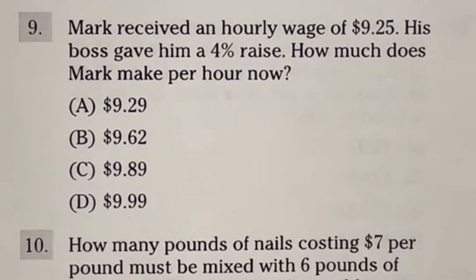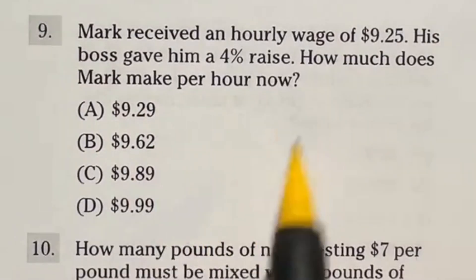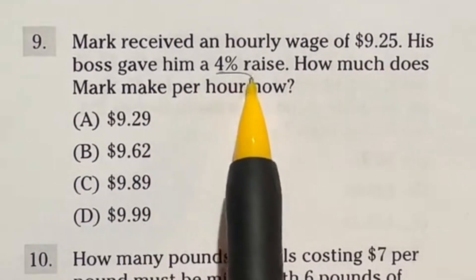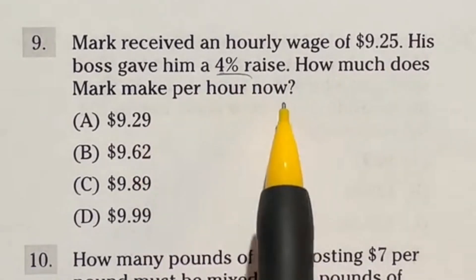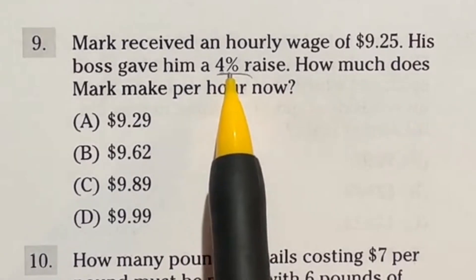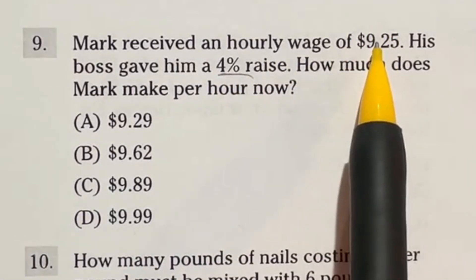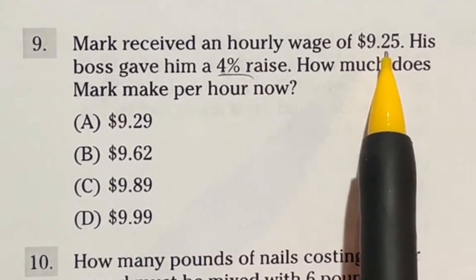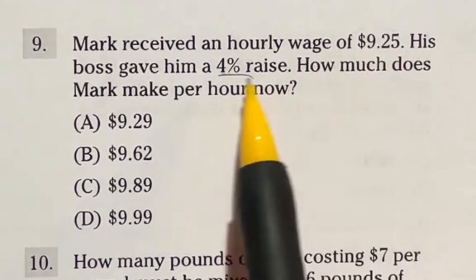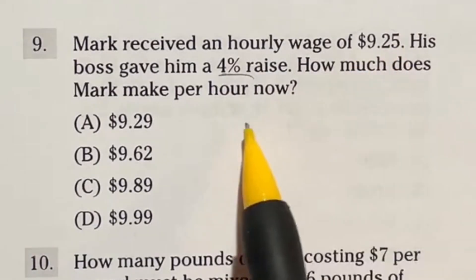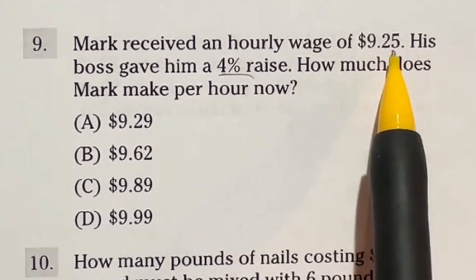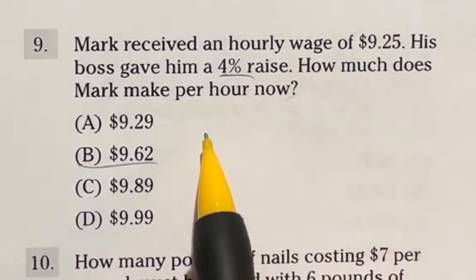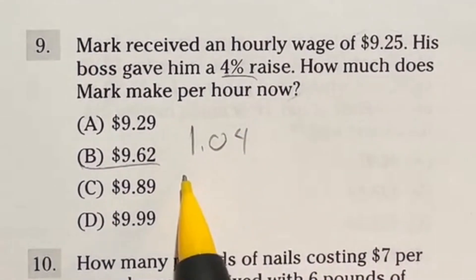How do you know how much money you make after a raise? That's what we're going to look at today with number nine. I'm going to talk about a lot of different ways you could go about doing this. So let's go ahead and get started. Mark received an hourly wage of $9.25. His boss gave him a 4% raise. How much does Mark make per hour now? So right off the bat, 4% of $10 would be moving the decimal place over just what, twice. So that would give us to the four. So 40 cents. So 4% of $10 would be 40 cents. So it's probably going to be somewhere around 40 cents, a little bit lower since this is not $10. So looking right at that off the bat, I would guesstimate my answer to be B. But let's go ahead and take a look.